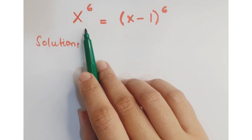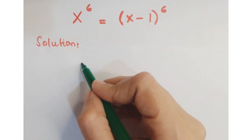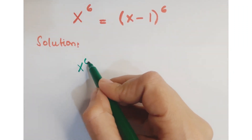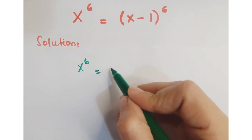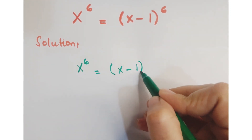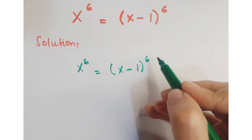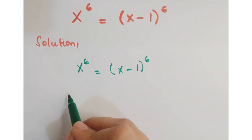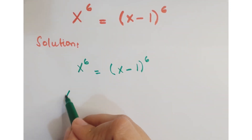Hi guys, look at this question. The question is x to the power 6 equals x minus 1 whole to the power 6, and we have to find the values of x.